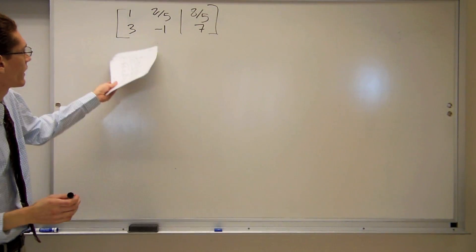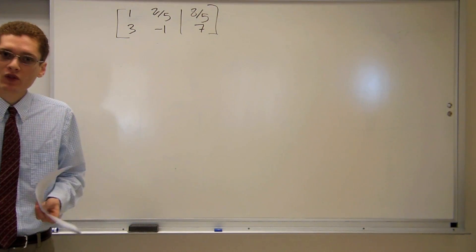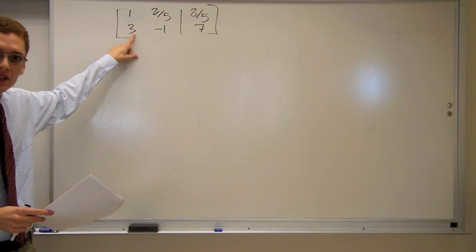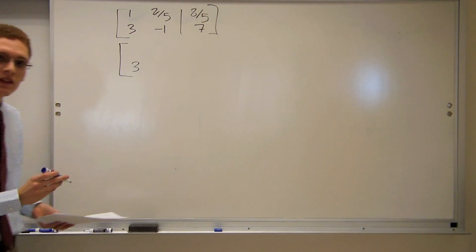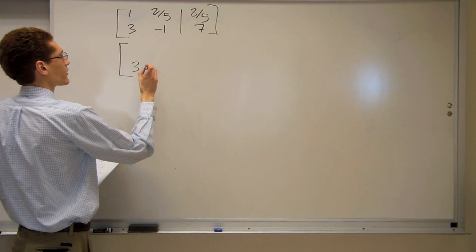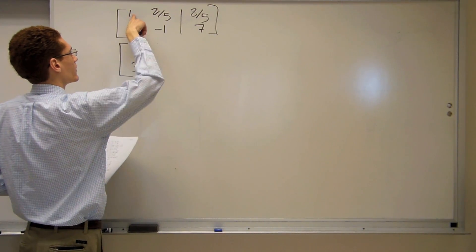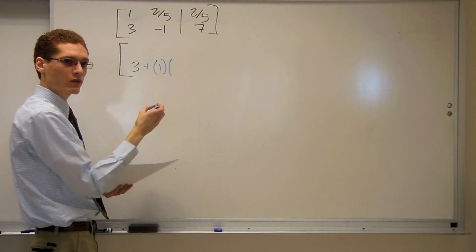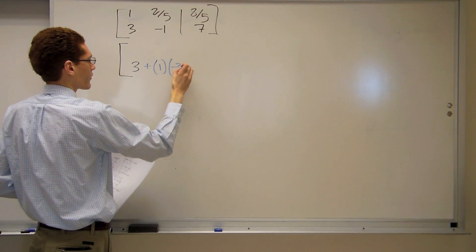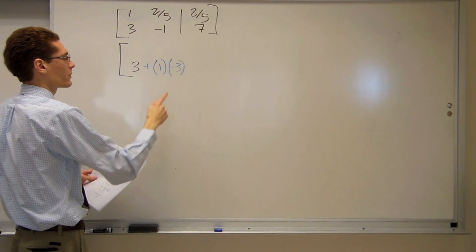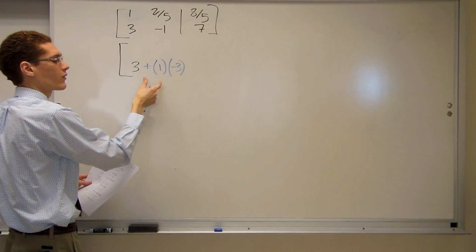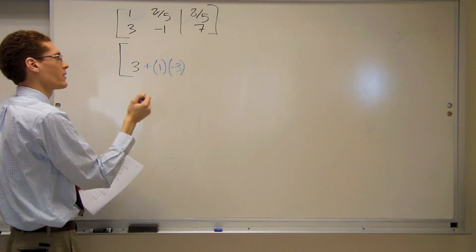So I've copied my matrix again over here. Now I'm going to use the third matrix row operation to get the 3 to be a 0. I'm going to take the 3, and I'm going to add to it the number from the row above, 1, times any real number. In this case, negative 3 is what will work because 3 plus 1 times negative 3 is going to be 0, which is what I'm aiming for.